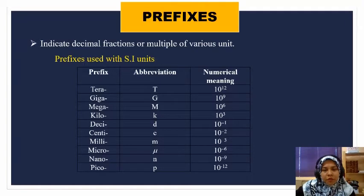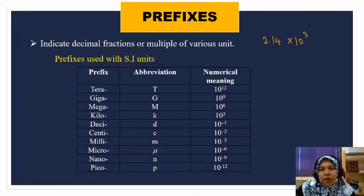Prefixes. Prefixes are used to indicate decimal fractions or multiples of various units. For example, when you have 2.14 times 10 power of 3 meter, you can use prefix to create it or make it in a decimal fraction. You can write 2.14 kilometer, because 10 power of 3 is kilo.